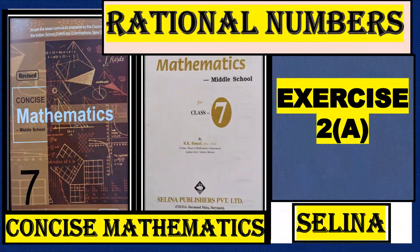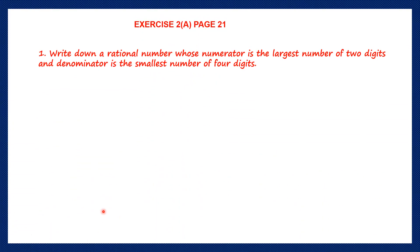Let's do rational numbers, exercise 2A. This is on page number 21. What are rational numbers? Rational numbers are any kind of number that you can express in the form of a fraction, as long as the denominator is not 0. Zero itself is a rational number. As long as you don't have a fraction with the denominator 0, all these numbers are rational numbers.